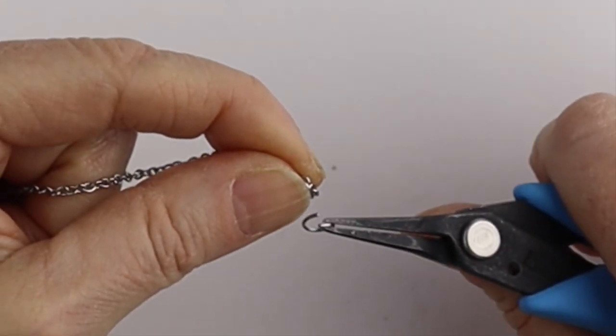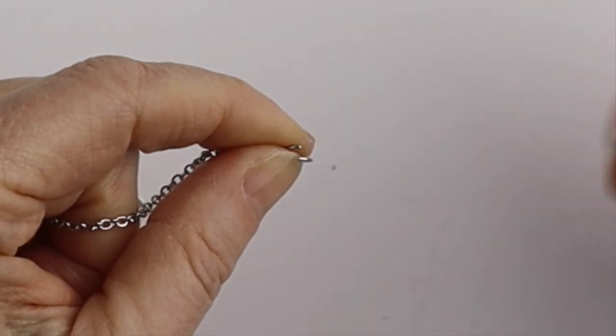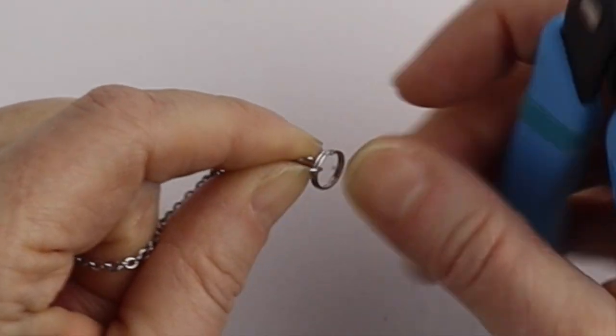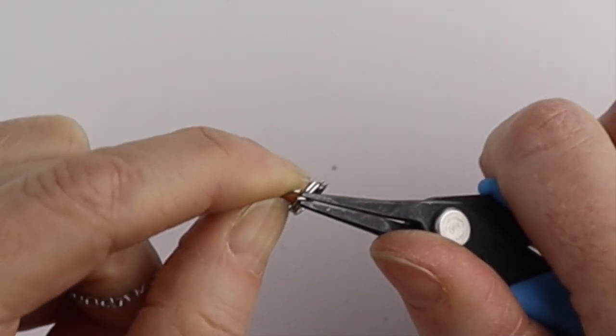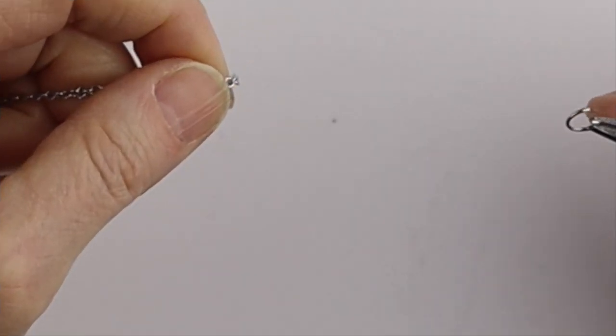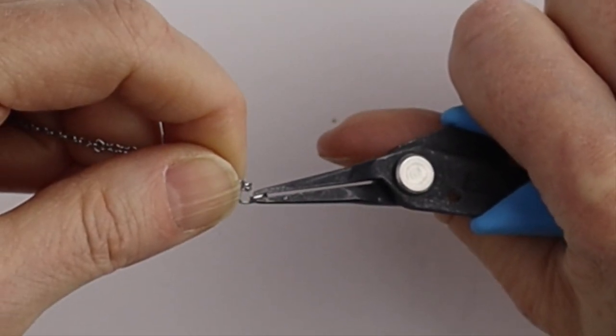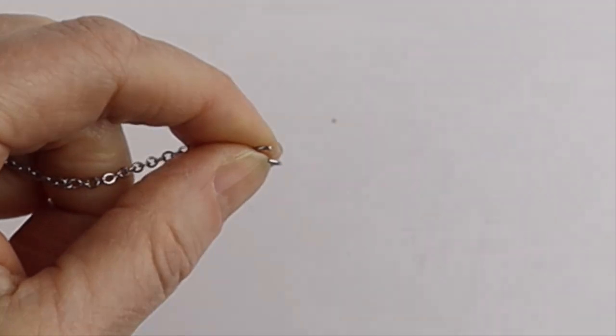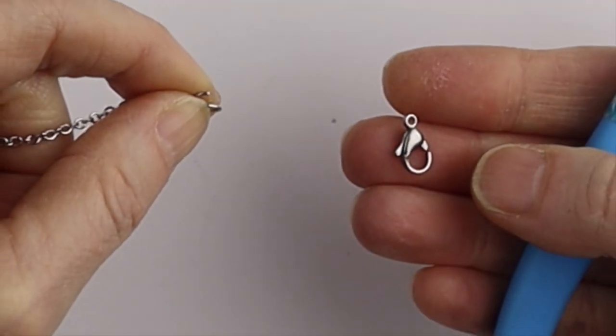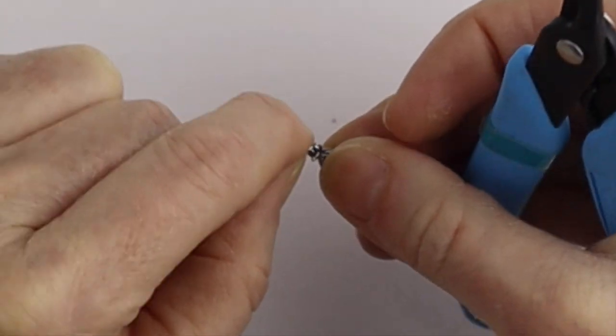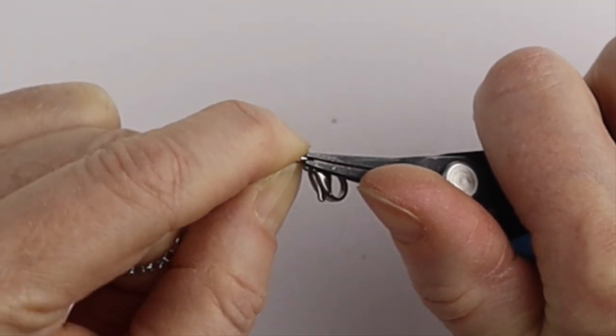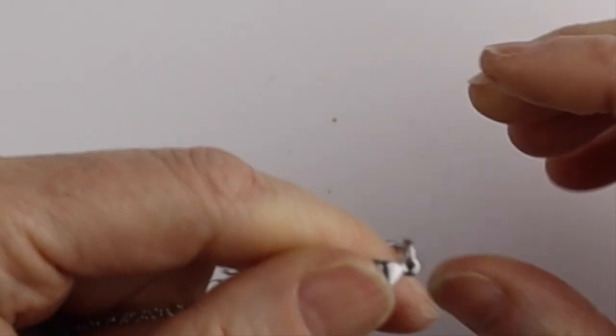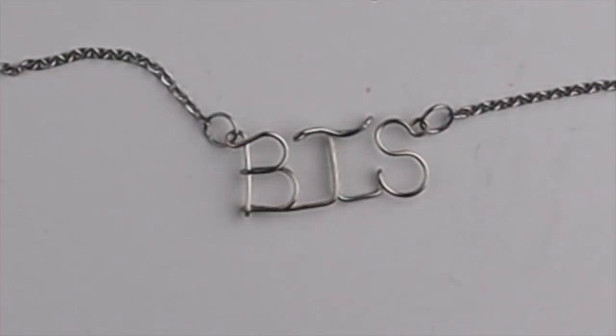And then we'll take the other end, put a jump ring and a split ring or another kind of clasp. And this side, put another jump ring and a lobster clasp. Put that on. I use the 12 millimeter lobster clasp. You're going to close it up. And there you have your super sweet and simple BTS necklace.